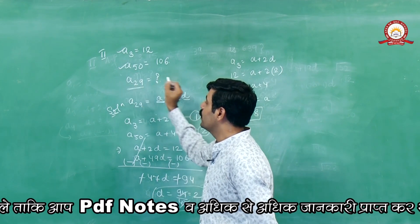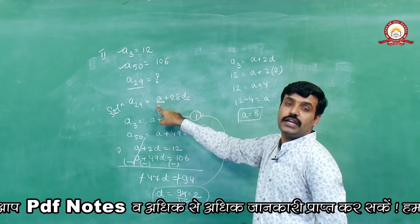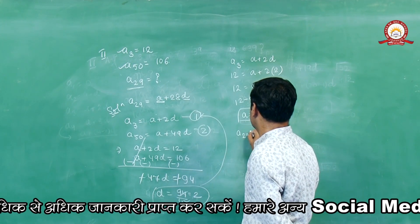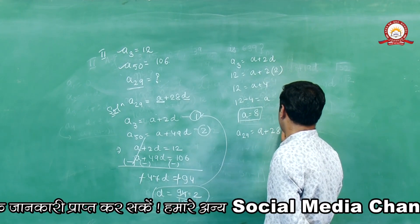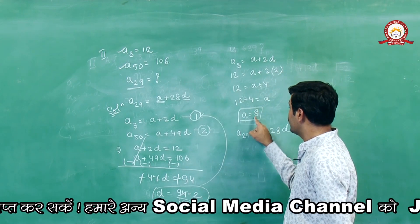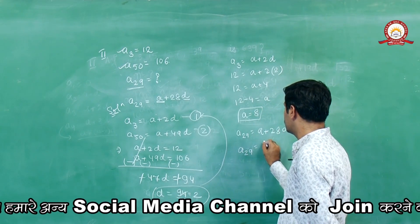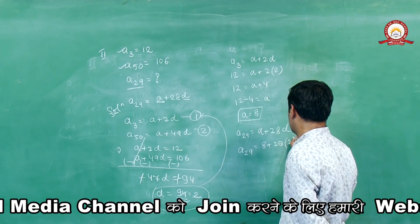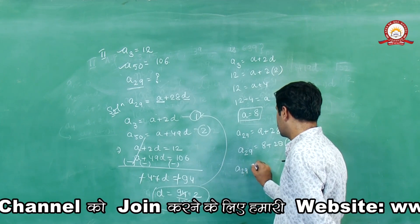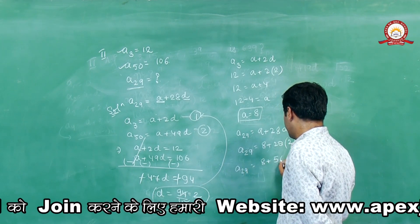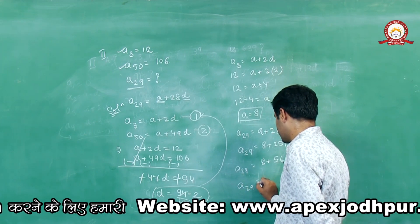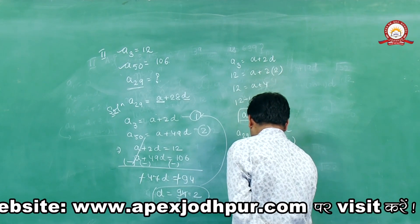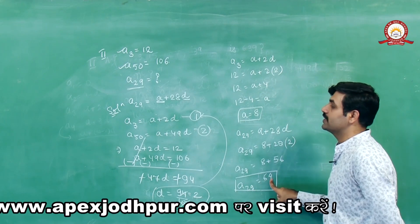A = 8 और D = 2 मिल गया। A29 = A + 28D = 8 + 28×2 = 8 + 56 = 64। So A29 = 64। This is your answer।